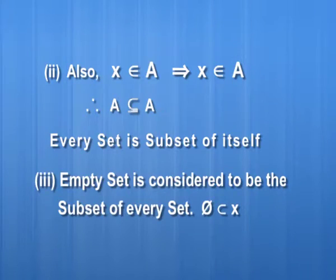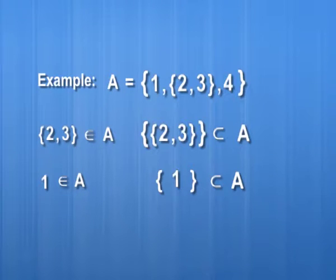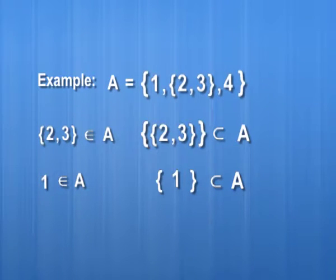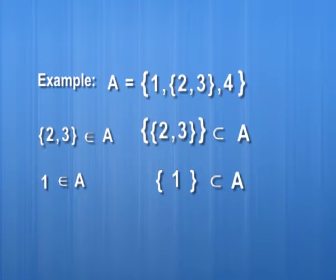So far we have used two symbols: 'belongs to' and 'contained'. Let me clarify these two symbols once again. Consider set A containing three elements: the first element is 1, the second is the set {2, 3}, and the third element is 4. The element 4 belongs to the set, so we use the 'belongs to' symbol. However, if we put an element within braces to form a singleton set, that singleton set will be a subset of set A. Similarly, 1 is an element of set A, so it belongs; and {1} as a set is a subset of set A.